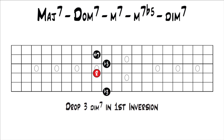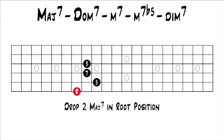This would work on any set of strings as well. I just showed you starting on the 6th string, but it would work through all the string sets. You just have to know where your 3rd, your 5th, and your 7th are to be able to move those one at a time to get to all the other 7th chords. One last thing I want to point out in this lesson is how to go from a drop 2 chord to a drop 3 chord, or vice versa.